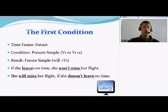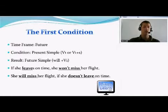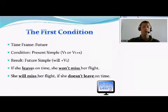There are three different types of conditional sentences. The first condition talks about the future. For the condition we use present simple, and for the result we use future simple. For example, if she leaves on time, she won't miss her flight. Or, she will miss her flight if she doesn't leave on time.